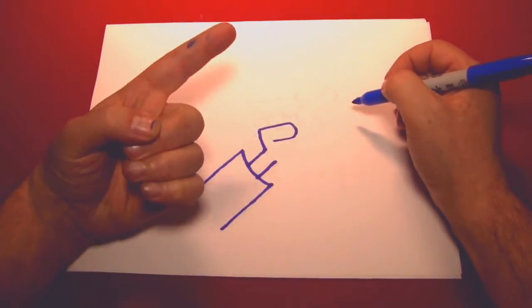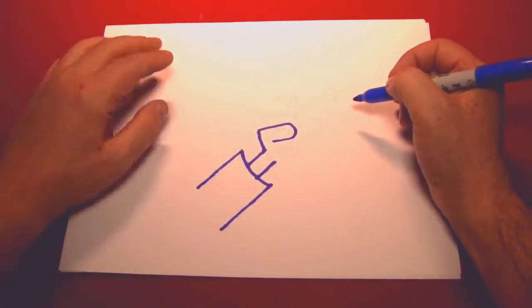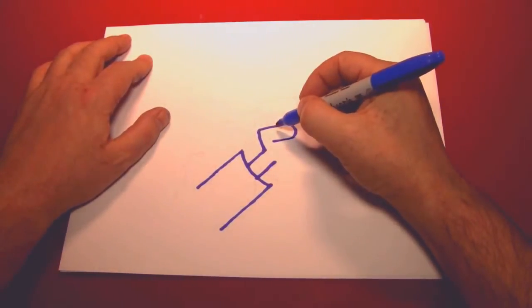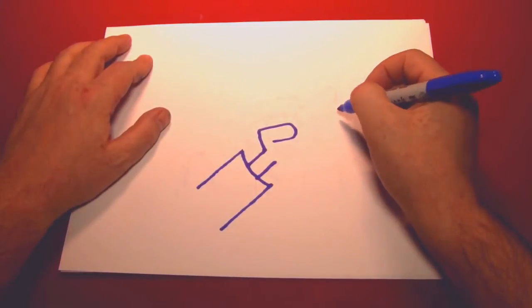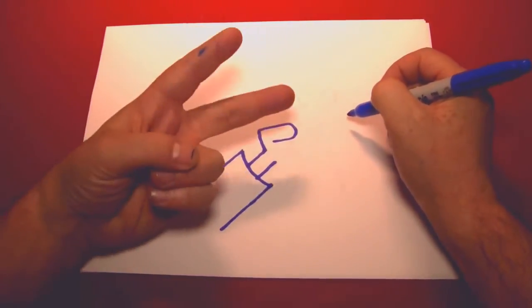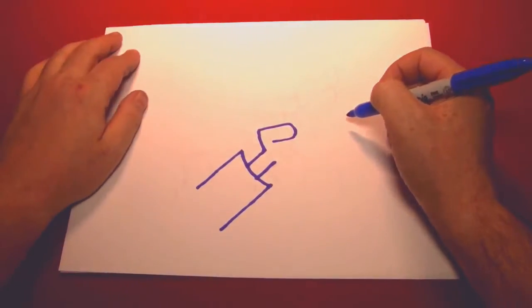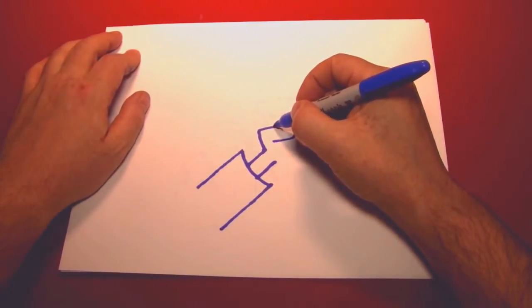In the peace sign the thumb kind of comes up like that. As you can see. And then the hand makes a V with these two fingers, the index and the middle finger. That's right, V for peace.